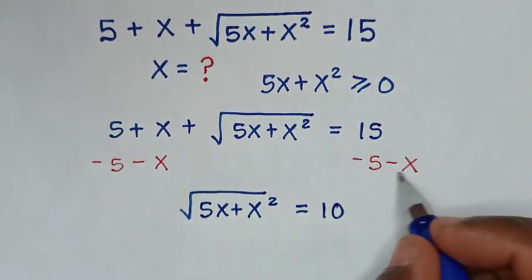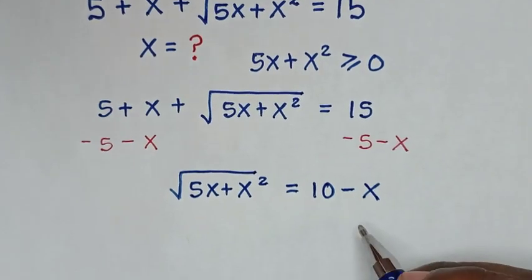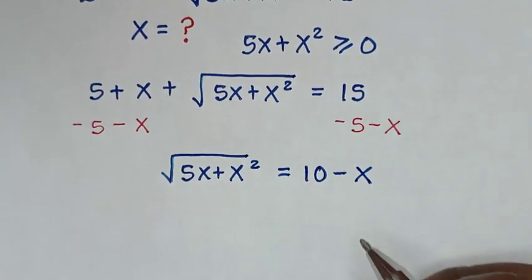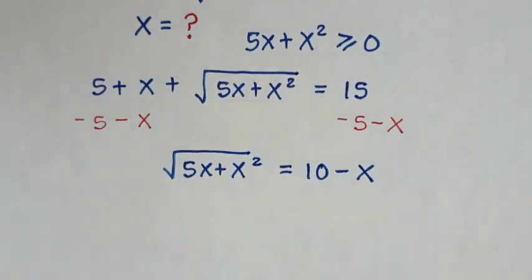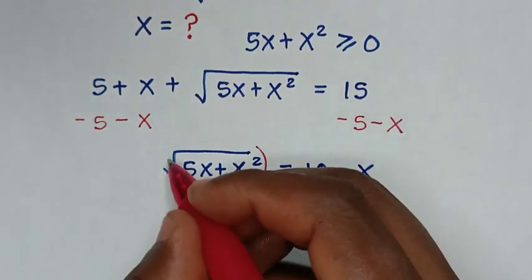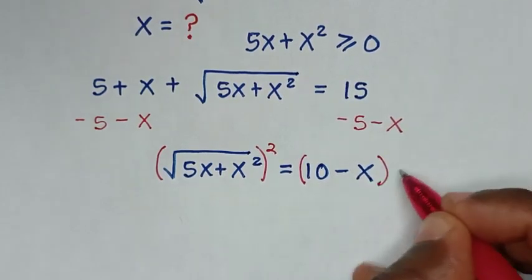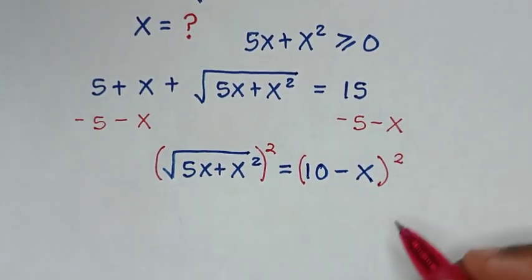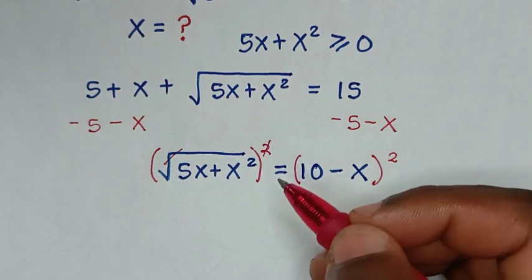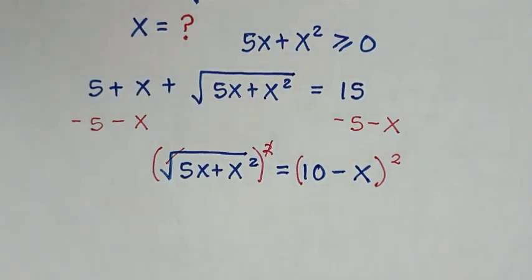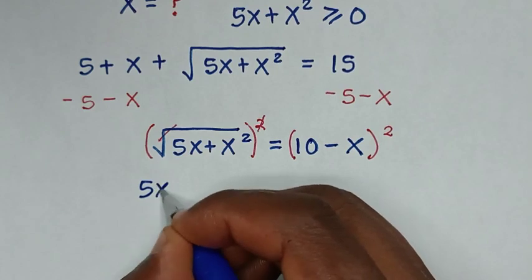In the next step, to remove this square root we will square the whole equation on both sides. The square root will cancel the square, so on the left side it will remain 5x plus x square,